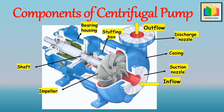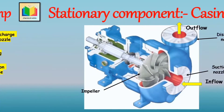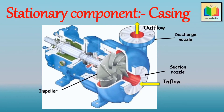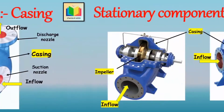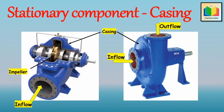The first stationary component is the casing. It is an airtight chamber in which the impeller rotates. It is provided with a suction nozzle for the inlet and a discharge nozzle for the outlet for the liquid to be pumped. The function of the casing is to convert the kinetic energy imparted to the liquid by the impeller into useful pressure energy.